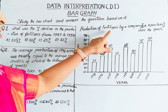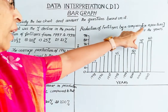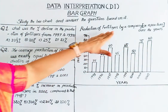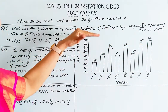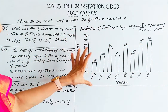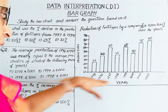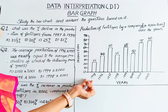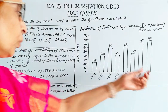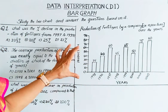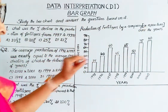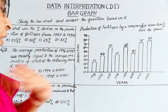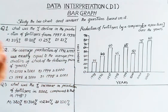We will study a bar chart showing the production of fertilizers by a company in units of 10,000 tons over the years 1995 to 2002. Study the bar chart and answer the following questions based on it.